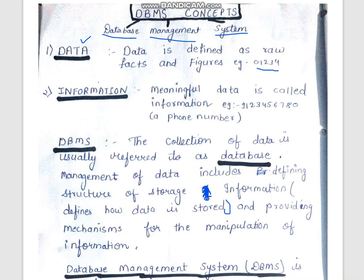Now, what is information? Many people think that data and information are the same, but they are different. Information is meaningful data — data that has some meaning for you. For example, the number 01234 is just data. But if I tell you that this 10-digit number is my mom's phone number, then it becomes information for you. Information is nothing but meaningful data.